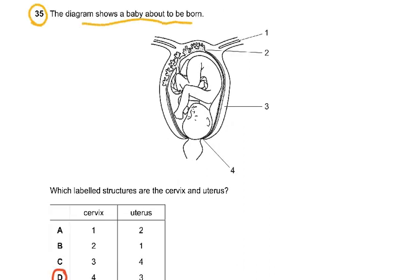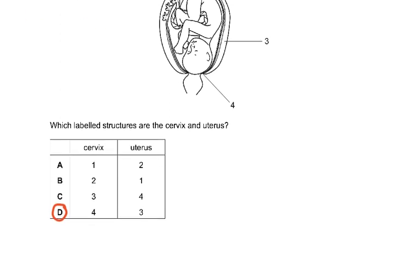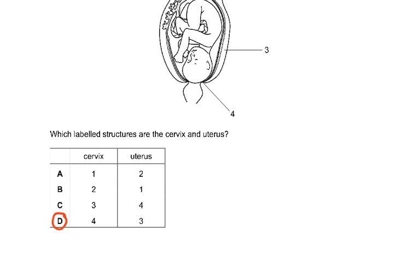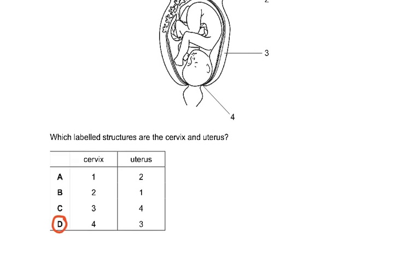Question 35: the diagram shows a baby about to be born. Structure 1 appears to be the oviduct, 2 is the placenta, 3 is the uterus, and 4 is the cervix. Which structures are the cervix and the uterus? That was 4 is the cervix and 3 is the uterus — a simple, not very difficult question.